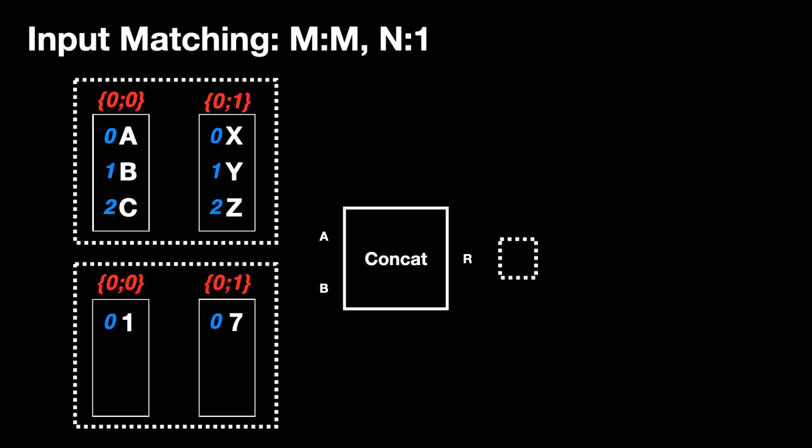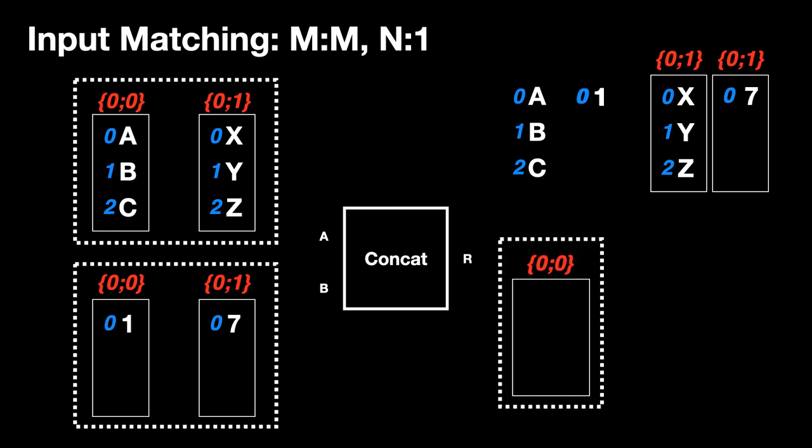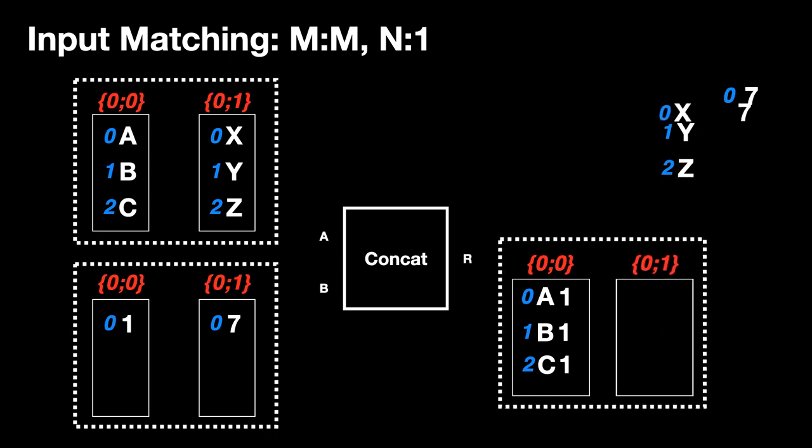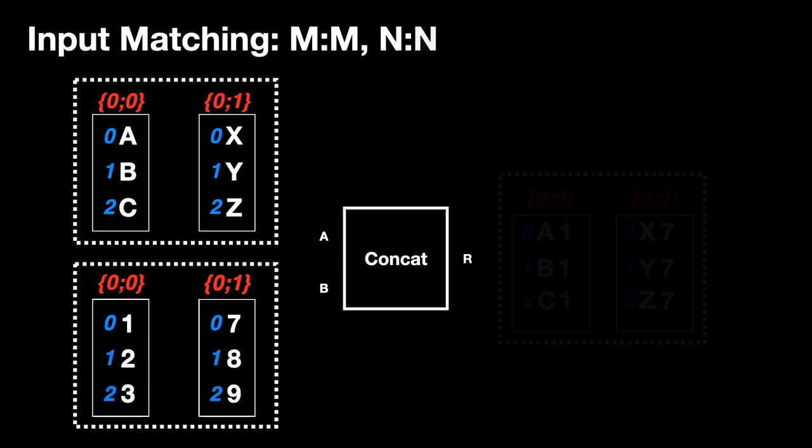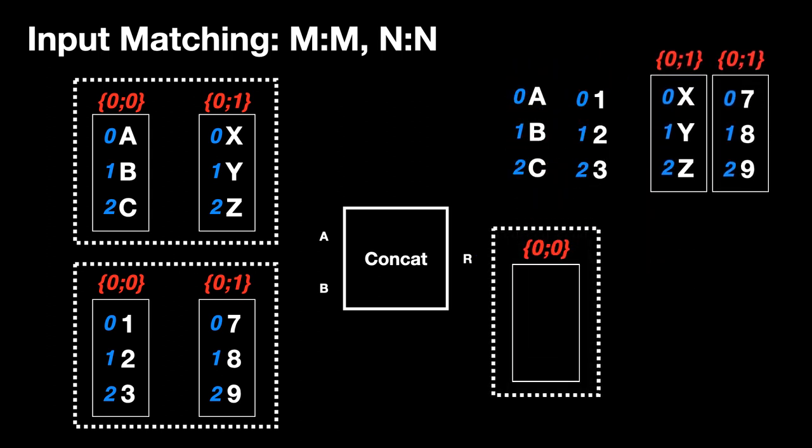In this scenario we have two branches in both a and b but the branches in b only have one item apiece. First we match the branches. And then we match the items in each branch pair. In this scenario we have m equals two branches in a and two branches in b and each branch has n equals three items. First we match the branches. And then we match the items in each branch pair.